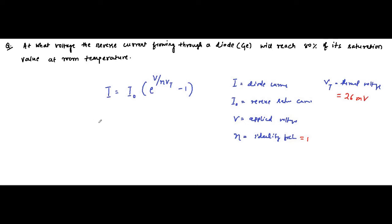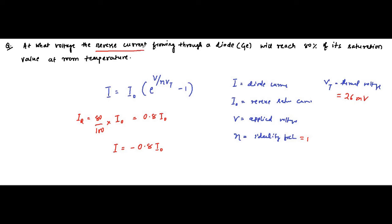According to the question, the diode reverse current is equal to 80% of the reverse saturation current, that is 0.8*I0. So in place of I we will write minus 0.8*I0. Why? Because reverse current is being mentioned. If it were forward current it would be positive, but since it is reversed we write minus 0.8*I0.